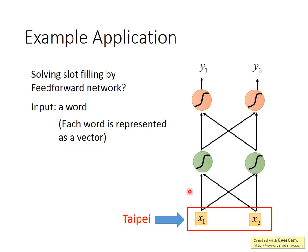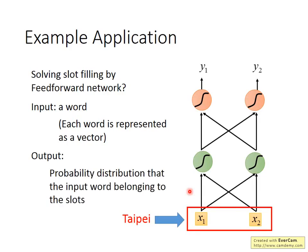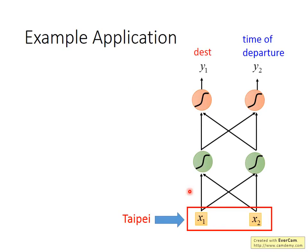Suppose we can represent a word as a vector. You can throw this vector into a feedforward network. The output you hope for is a probability distribution in the slot filling task — representing the probability of which slot the input word belongs to. However, a feedforward network alone is not enough to solve this problem.